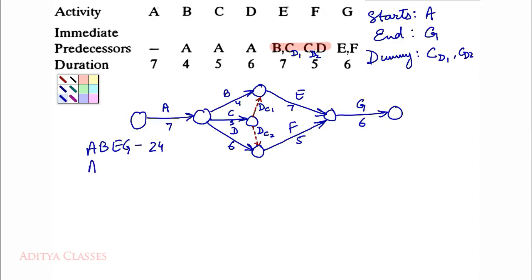Path A, C, E, G has duration: 7, 5 — giving 12, and 0 for the dummy — giving 12, and 7 — giving 19, and 6 — giving 25.